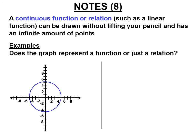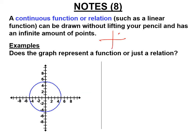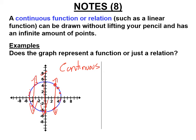A circle is a continuous graph — you can draw it without lifting your pencil. If you draw a vertical line through a circle, you can hit two points in many places. So a circle always fails the vertical line test and is a continuous relation, not a function.